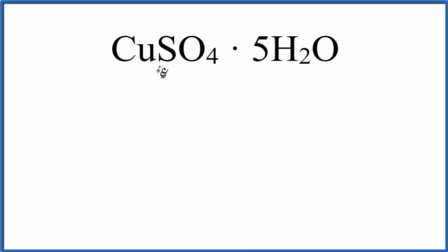In this video, we'll find the number of atoms in copper sulfate pentahydrate. This is CuSO4. This dot means we have five H2O molecules. So let's figure it out for copper sulfate and then the pentahydrate.